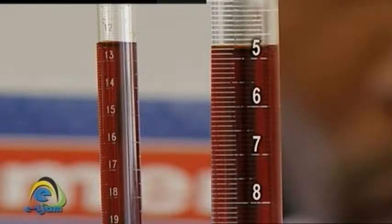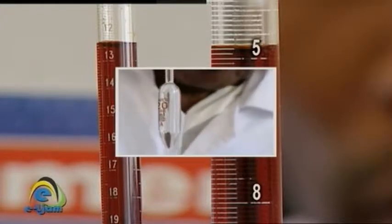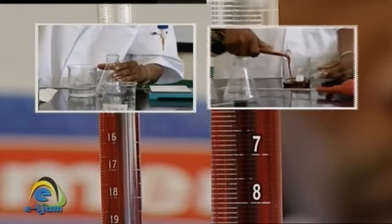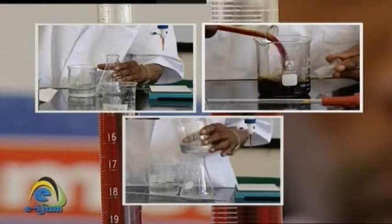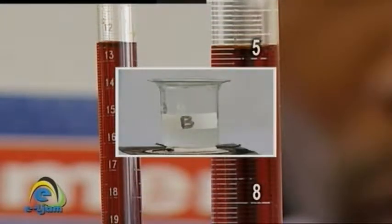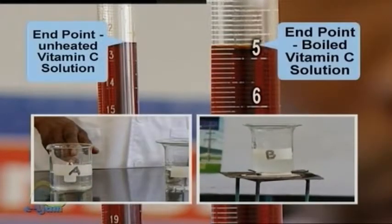You will notice in the method above that the variables were identified and one was controlled — that is, it remained the same for each of the experiments conducted — while the other was manipulated, that is, it was changed for each experiment. The controlled variables were the volume of vitamin C solution titrated, the concentration of iodine solution, the volume of starch indicator used, and the temperature at which the titration is carried out. The manipulated variable was the use of heat-treated and non-heat-treated vitamin C solution.